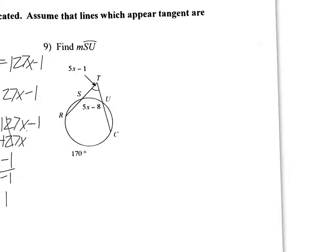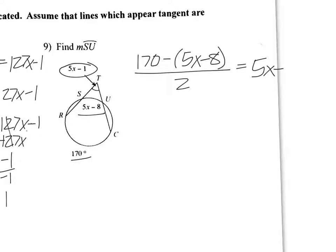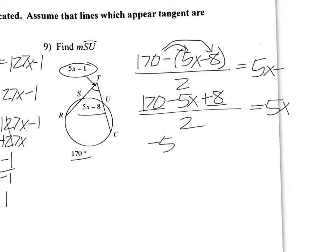One more. Find arc SU. So this one's on the outside. Remember, on the outside, you subtract. So you take this minus this to equal that. So 170 minus. Okay. Here you've got to be careful. You want to put 5x minus 8 in parentheses because you're subtracting all that. Divide by 2 equals 5x minus 1. So the reason you have to do parentheses is because that's going to make the 8 here positive. Think of it as distributive. 5x becomes negative. And then the 8 becomes positive when you distribute there. Divide by 2 equals 5x. Okay. Combine the 170 and the 8. And that's 178. So you get negative 5x plus 178 all divided by 2 equals 5x.